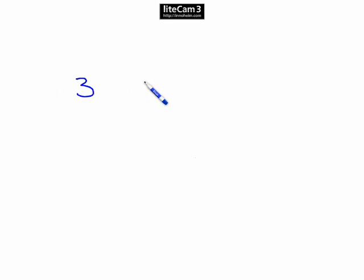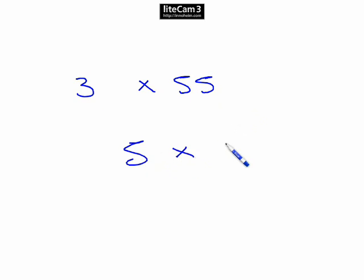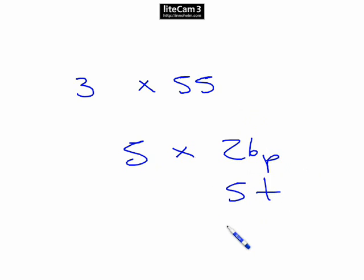Question 2. Three 55-seater buses are booked on a school trip. Five classes of 26 pupils, 5 teachers and 8 parents are booked on the trip. How many more pupils could go on the trip?